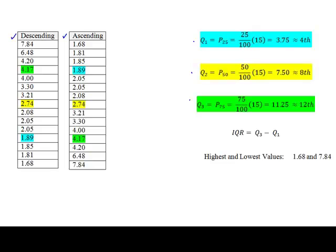The first step in identifying outliers is to create what we refer to as a five number summary. And the five number summary is literally just made up of Q1, Q2, Q3, the highest and the lowest values. So, I'm going to start with finding my quartile values.